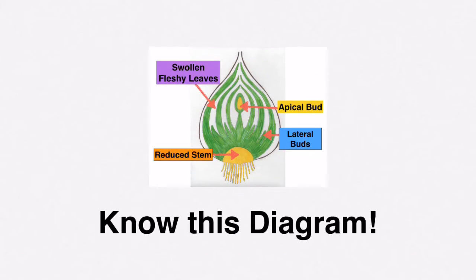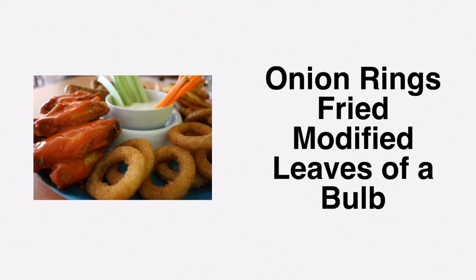This diagram of the onion bulb appears twice on your course, so it's a wise investment to learn how to draw it. Know the apical bud, the reduced stem, the lateral buds, and those swollen fleshy leaves. So those delicious onion rings are fried, modified leaves of a bulb.